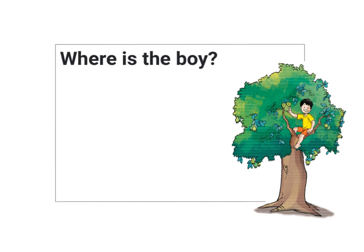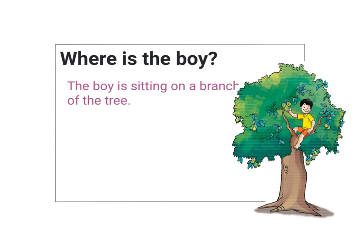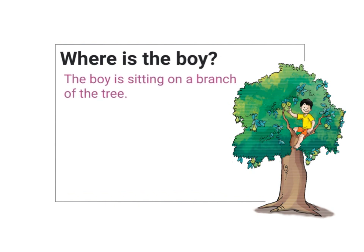The next question is: where is the boy? To answer this question, I will again look at the picture of the tree. In the picture of the tree, the boy is sitting on the branch of the tree. So my answer is: the boy is sitting on a branch of the tree.